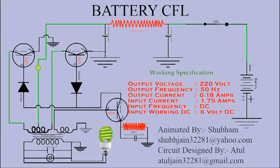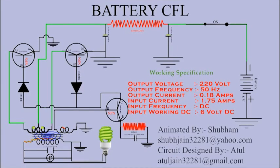Now electrons have reached the transformer and, crossing from the first winding, move towards the power transistors. Electrons will wait on both the transistors. As electrons pass from the primary winding, oscillation starts in the oscillation winding, from which one frequency is generated and goes to the base of the third transistor, which is low voltage, low current in nature.